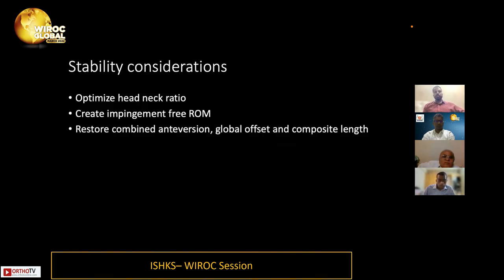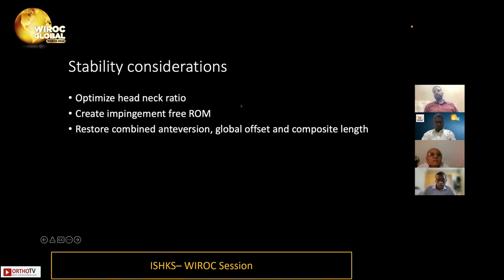Regarding stability, once we restore the combined anteversion, combined offset, and composite length, the hip will typically be stable. We must not aim to create undislocatable hips by testing at extremes of range of motion and repeatedly increasing neck length and offset, resulting in overly tight and overlengthened limbs. The target for combined anteversion is approximately 35 degrees in men and 40 to 45 degrees in women — achieving this will typically render the hip stable.